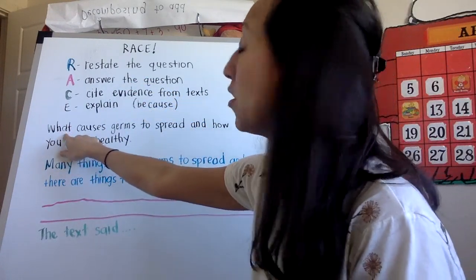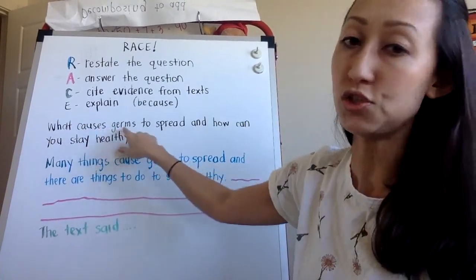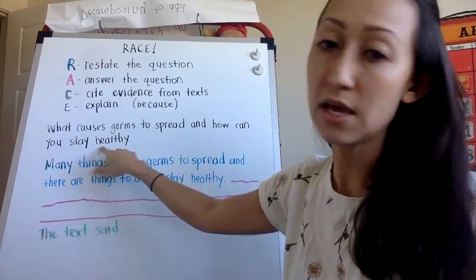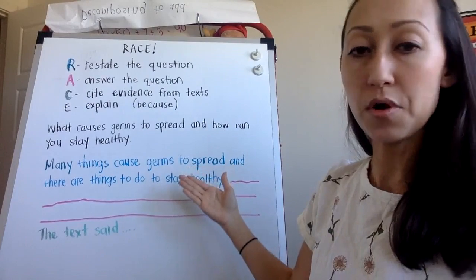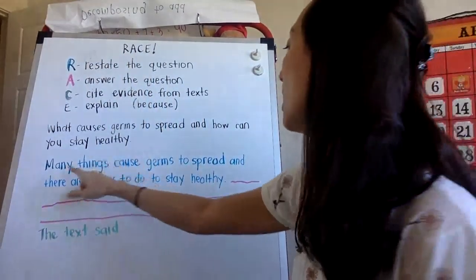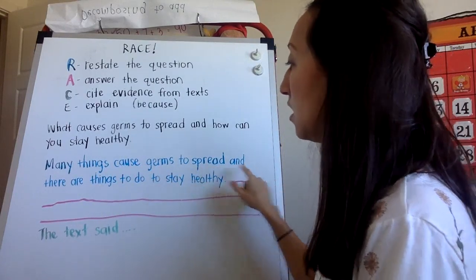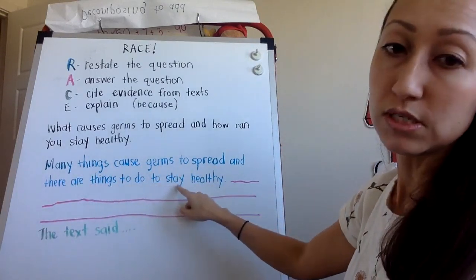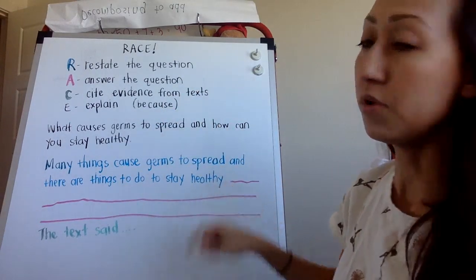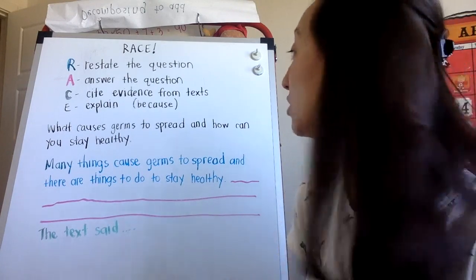So the question I want you to respond to is this one. What causes germs to spread and how can you stay healthy? So I did some of the parts for you. I restated the question. So I said many things cause germs to spread and there are things to do to stay healthy. So that was me restating the question. I put a period because the first sentence is just restating the question in your own words.